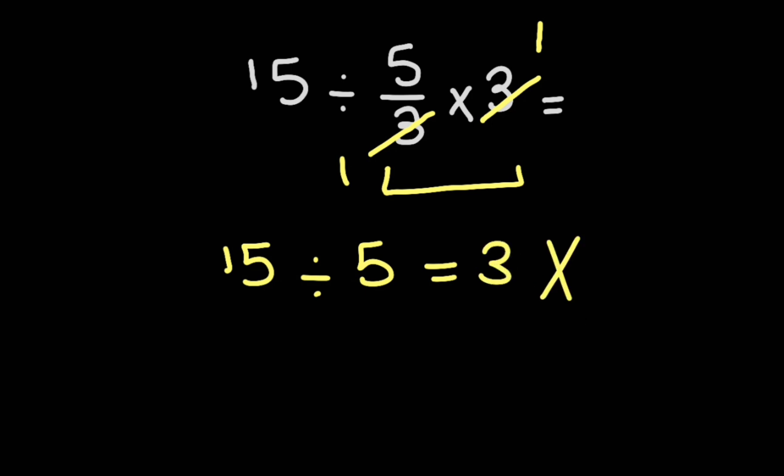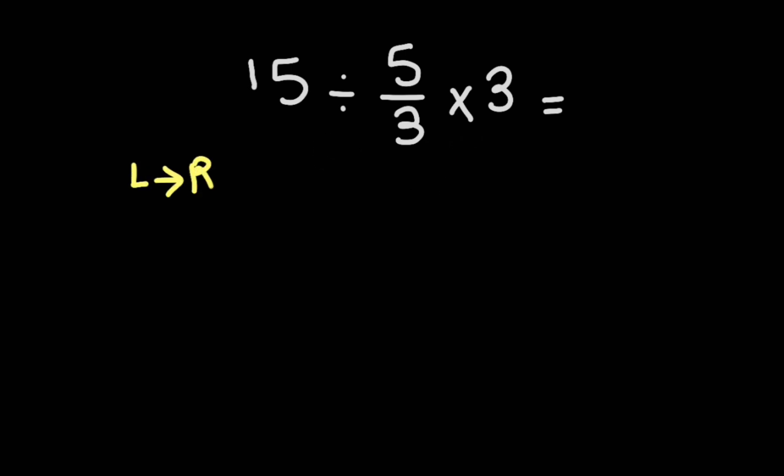But this answer is not correct. We know that according to the order of operations, multiplication and division are equally important, so we have to solve from left to right. Now 15 divided by 5 over 3, according to the KCF...